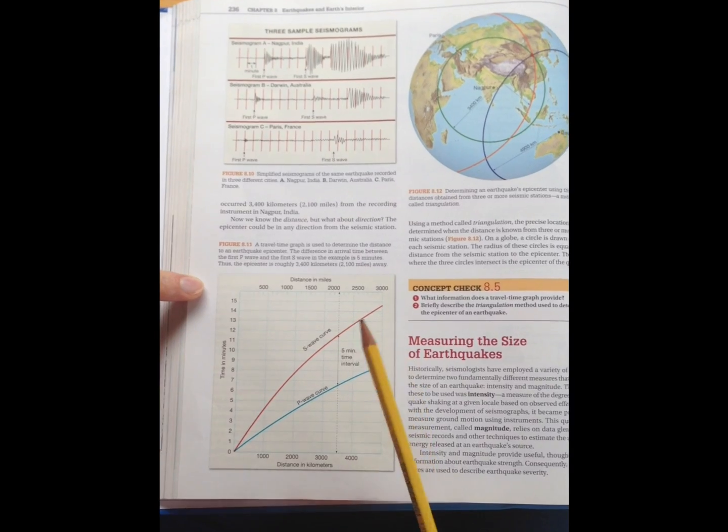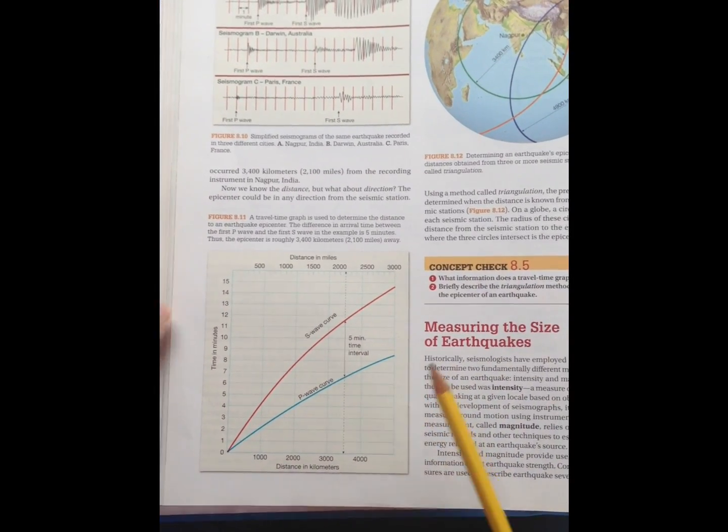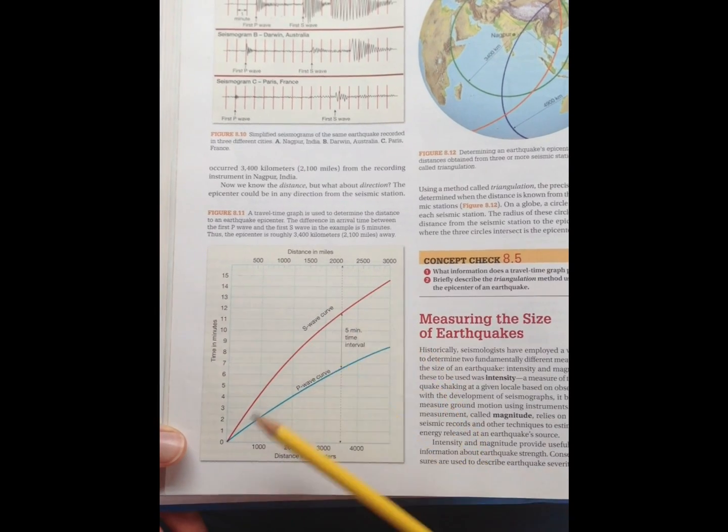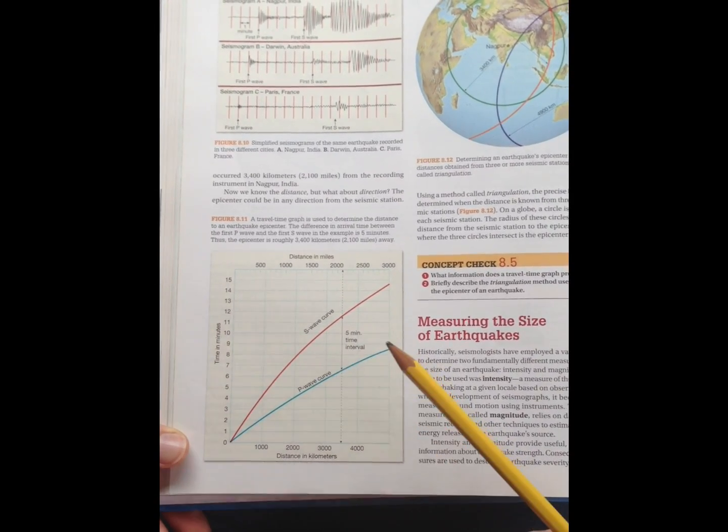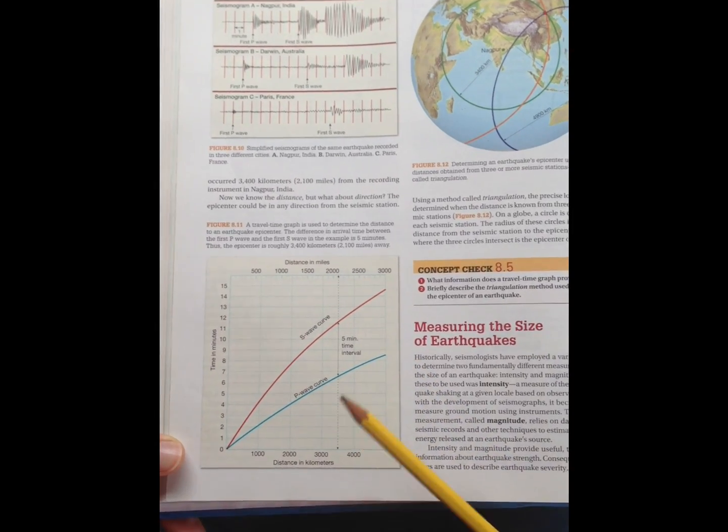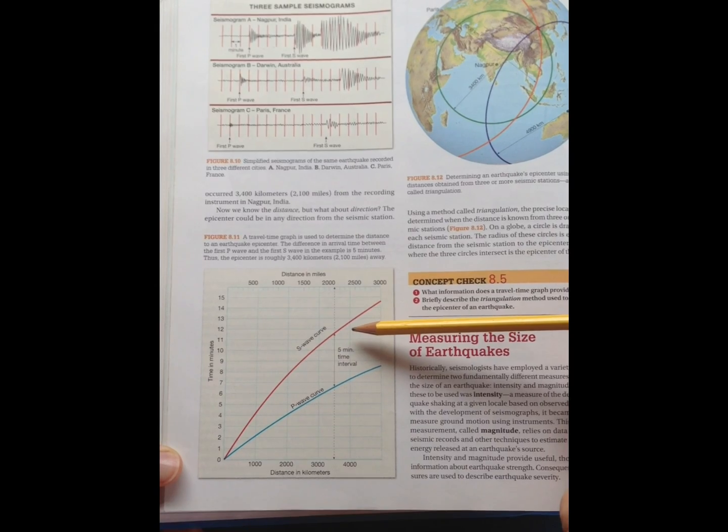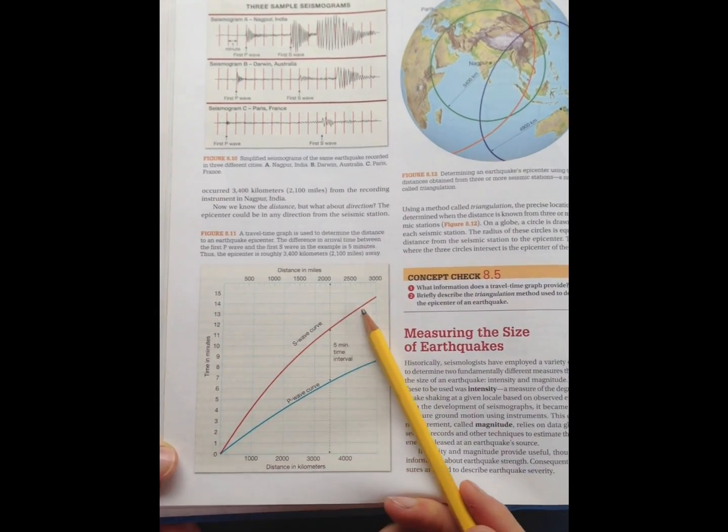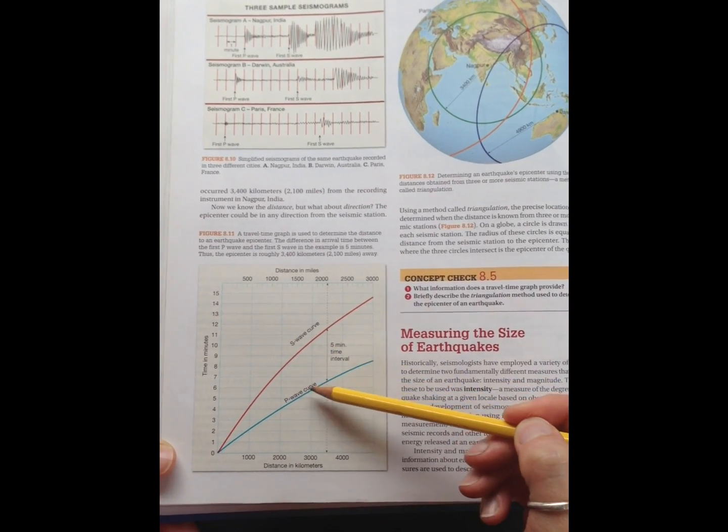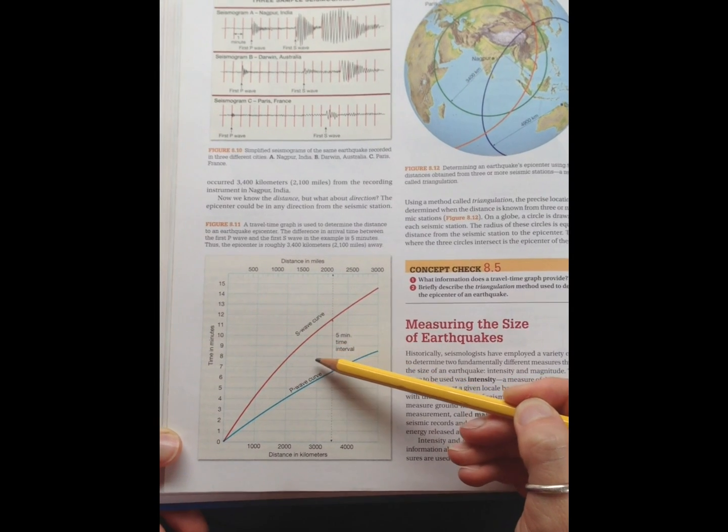On your book, that's figure 8.11. So these S-wave curves and P-wave curves were determined for us, and we can use this time travel graph to determine the distance of the epicenter of the earthquake from your location. So in India, the interval time between the S-wave and the P-wave was five minutes. So looking at the P-wave curve and the S-wave curve, the difference between the two curves of five minutes. So these blue lines here are each one minute.